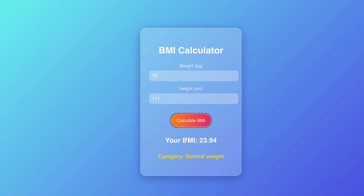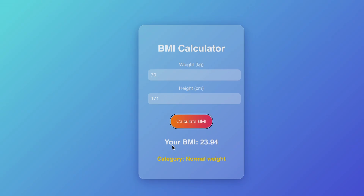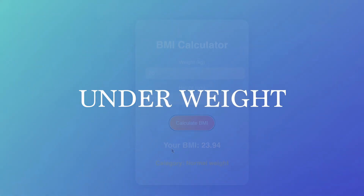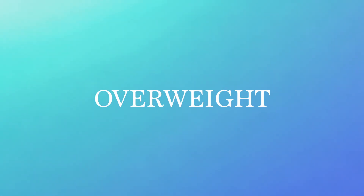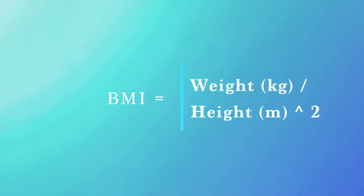We use BMI to assess whether someone is underweight, normal weight, overweight, or obese. Knowing your BMI can give you insights into potential health risks related to weight. The formula is straightforward: BMI equals weight in kilograms divided by height in meters squared.